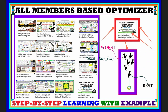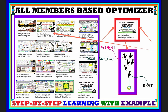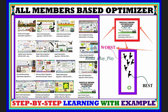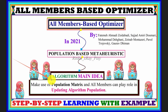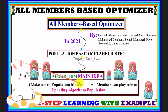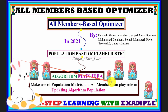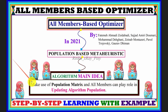In Particle Swarm Optimization, when we update the position of other members it is influenced by the best solution and the worst solution — all members update their position around the best and worst solutions. Like PSO, other metaheuristics also use this method to update agents' positions in the search space to find the optimal solution.